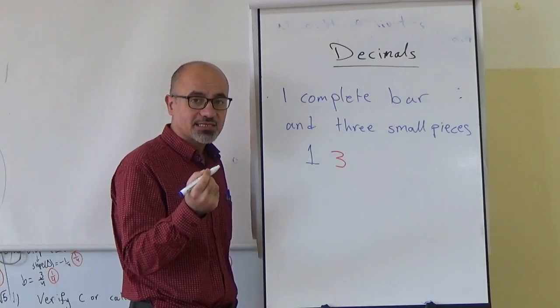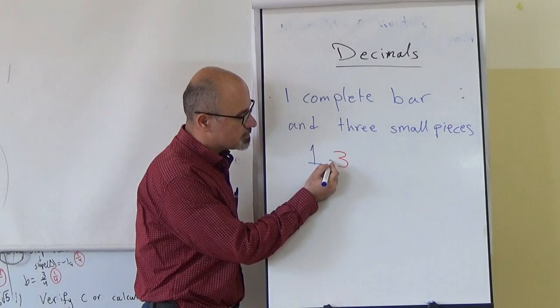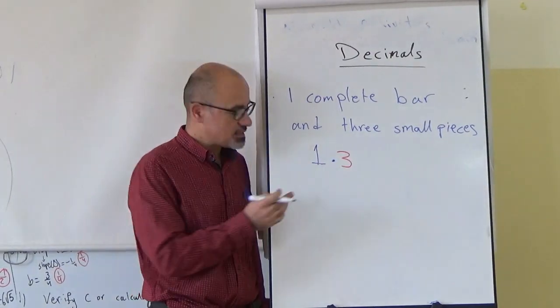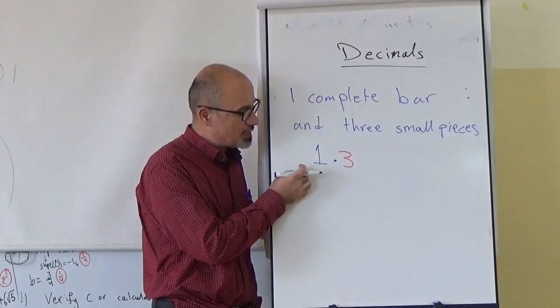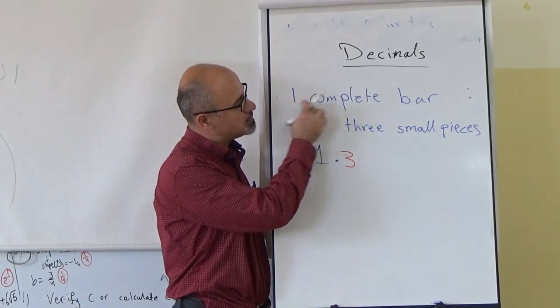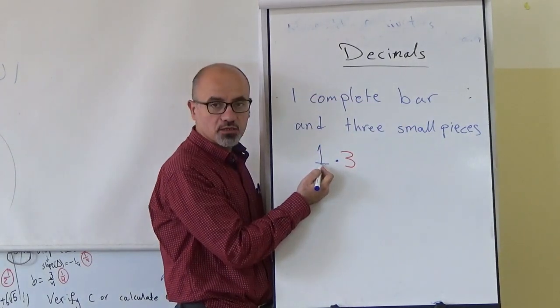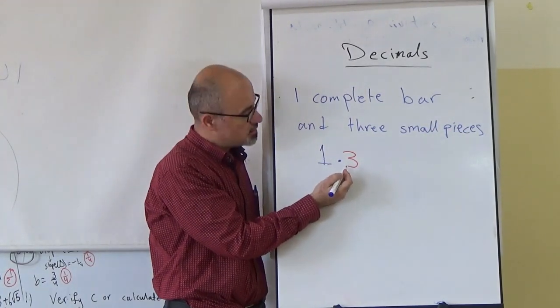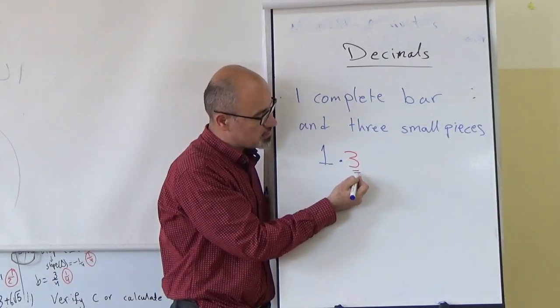So how can we separate them? We will use the decimal point. This is the decimal point. It separates the complete numbers of chocolate bars and the number of pieces. So we have one complete bar, it is one, and three small pieces or three tenths. These are the three tenths.